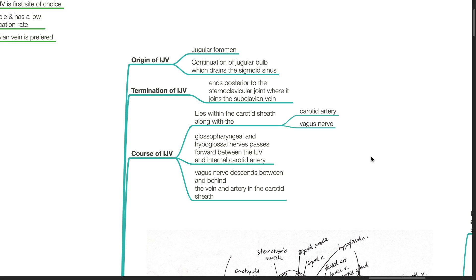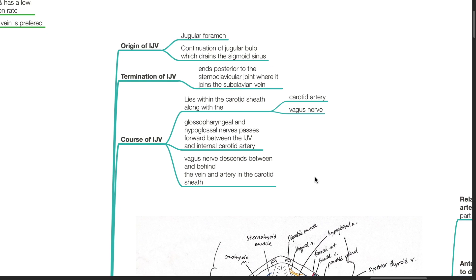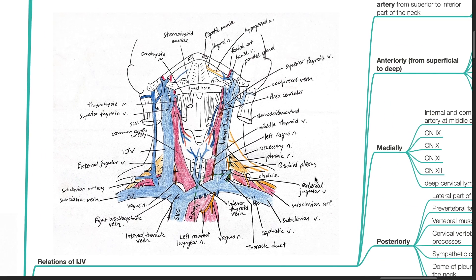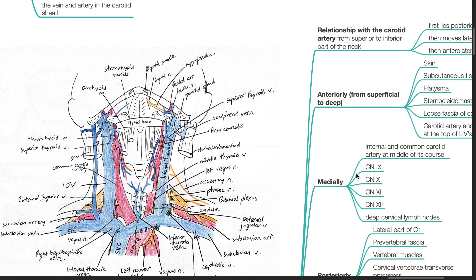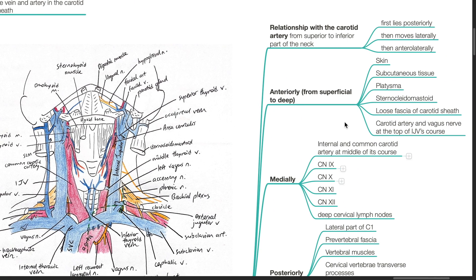The vagus nerve descends between and behind the vein and the artery in the carotid sheath. Regarding relations of the IJV — from superior to inferior part of the neck, the IJV lies posterior, then moves laterally, then anterolaterally to the carotid artery.